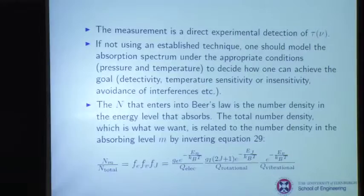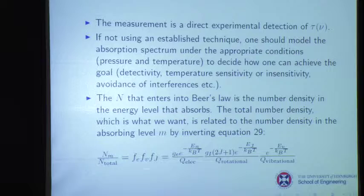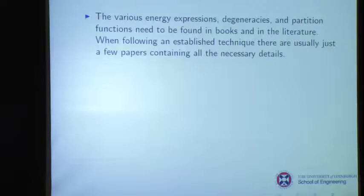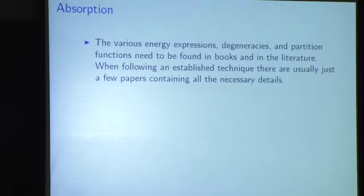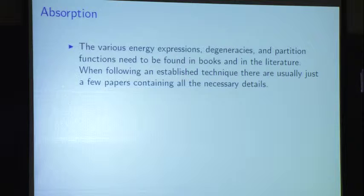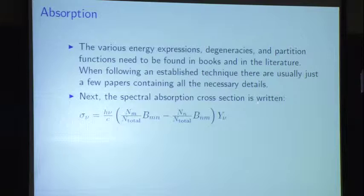Notice that N total is what you're trying to measure, but what you're actually measuring is Nm. Using statistical mechanics, you invert that to get what you're trying to measure. Things like degeneracies and partition functions you can usually find in the literature. If you're following an established technique, grab a few comprehensive papers, see if they agree with each other, and follow the prescription.